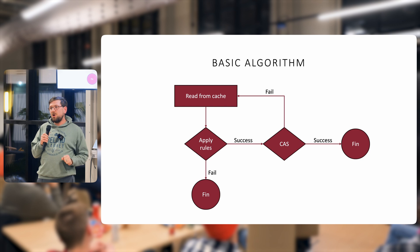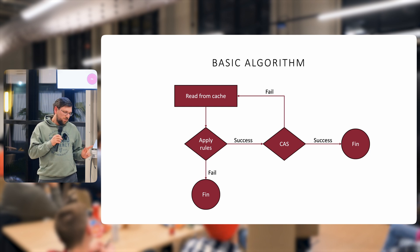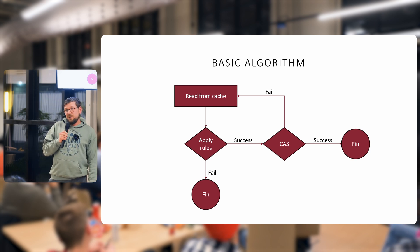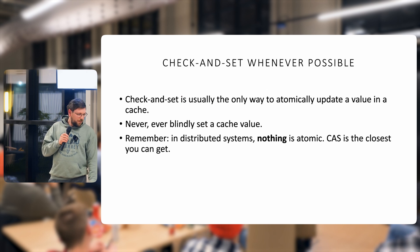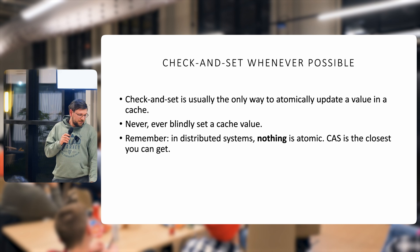So in other words, if we were to tell the cache only update this value if it's a v2, never if it's a v3 or v1 or anything different from what we expect. If you've worked with APIs, you probably also know this is like e-tags. It's very similar. So always use compare and swap in your caches. It's the only way to get anywhere close to atomic and never, ever blindly set a value in a cache.